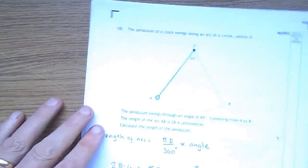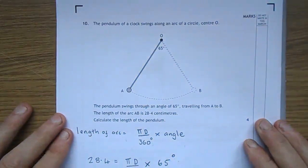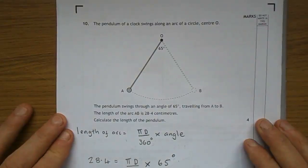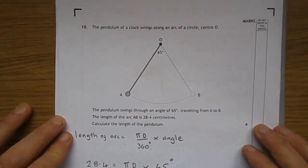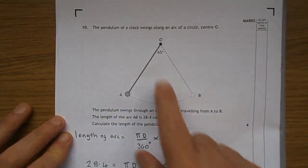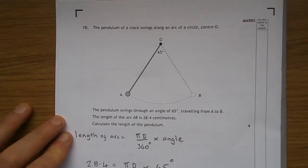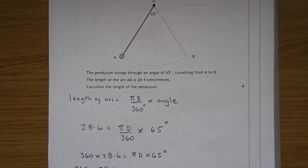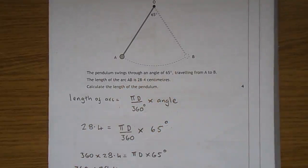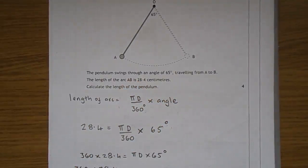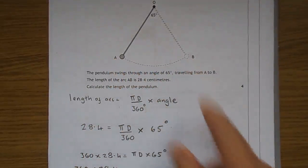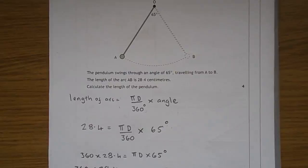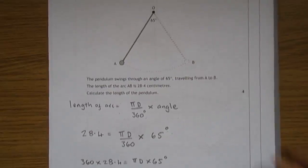Question 10. There we go, there's question 10. The pendulum of a clock swings along an arc of a circle, centre O. The pendulum swings through an angle of 65 degrees, travelling from E to B. So this is a slightly unusual spin on it. So they give you the length of the arc AB. Normally you've got to work that one out. It's 28.4 and you have to calculate the length of the pendulum.